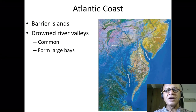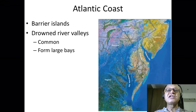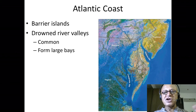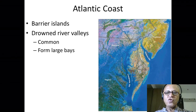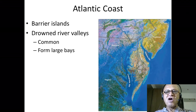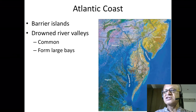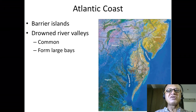Here are the barrier islands. Drowned river valleys are also common — when sea level was low, many rivers were coming in and carving their own channels due to high flow rates, and when sea level rose they got drowned by ocean water, becoming drowned river valleys. The Delaware Bay and Chesapeake Bay are the most famous examples of drowned river valleys.